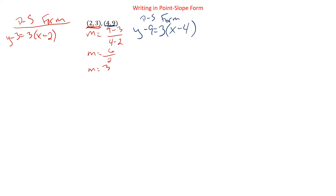This is where slope-intercept is a little bit better, because there is exactly one way to write every line in slope-intercept form. A lot of the questions are just going to have you write your equation in point-slope form — then we're done. If it gives you a slope and a point, you don't even have to find the slope; you just use the slope they give you and plug in the point. But a lot of times we like our final answer in slope-intercept form.